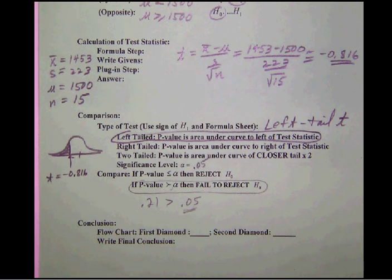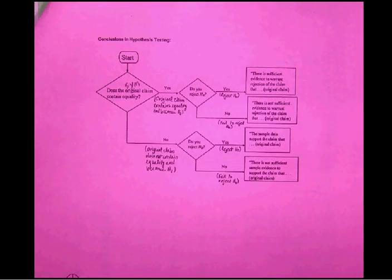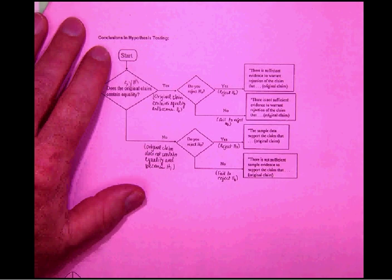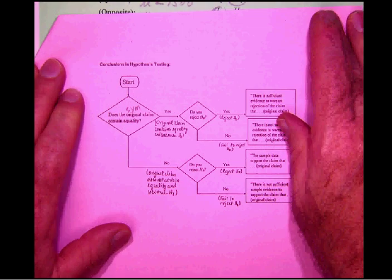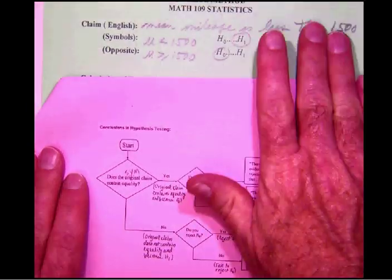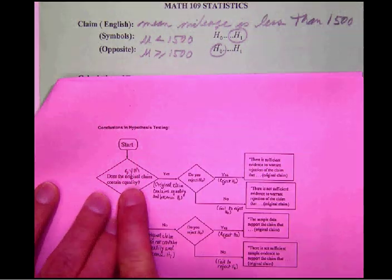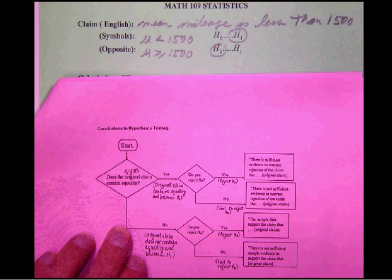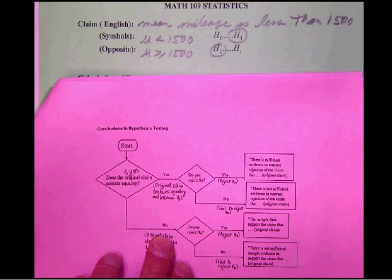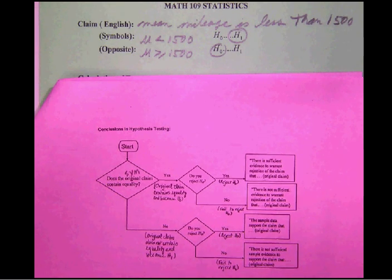Let's go here to our diamonds. And we begin to ask the questions, does the original claim contain equality? Well, no, the original claim was that the mileage was less. So the first question here is answered no, we didn't claim it was equal. And then did we reject? Well, no, we didn't. Because there was not sufficient sample evidence to support the case. And so let's go back over here to ALEKS and complete our problem.